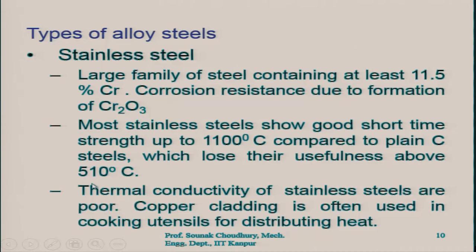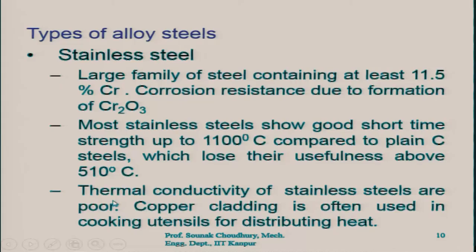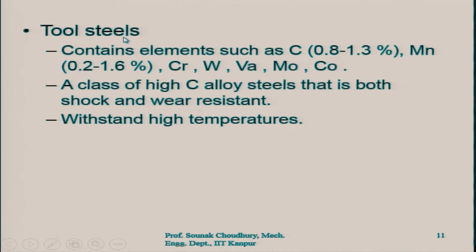The thermal conductivity of stainless steels is poor. Copper cladding is therefore often used in cooking utensils for distributing heat — you must have seen stainless steel utensils with a copper coating at the bottom, for equal and homogeneous distribution of heat. Tool steels — by the name itself — are the steels used to make different kinds of tools: tools for the conventional cutting process, such as single point cutting tools, milling cutters, drills, and also for metal forming operations such as dies and punches.